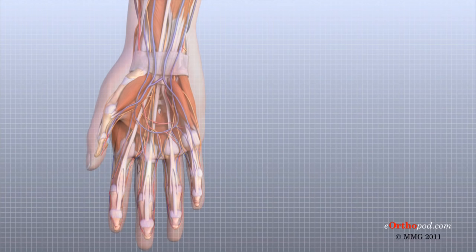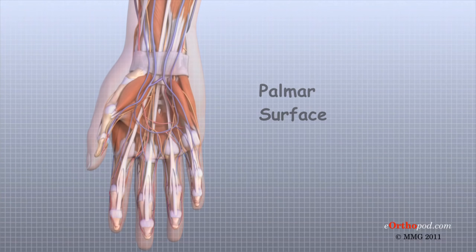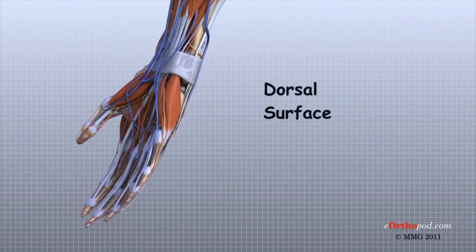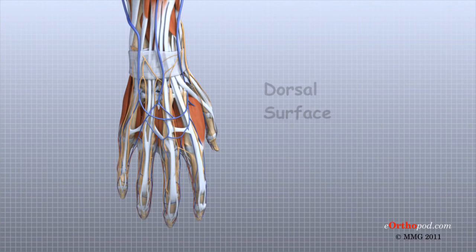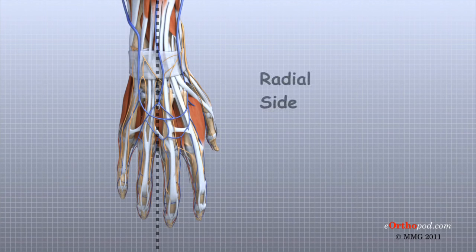Let's define some common anatomic terms as they relate to the hand. This will make it clearer as we talk about the structures of the hand later. The front or palm side of the hand is referred to as the palmar side. The back of the hand is called the dorsal side. The half of the hand from the middle finger to the thumb is called the radial side, and the other half is called the ulnar side.